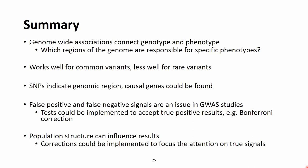To summarize the presentation on genome-wide association studies (GWAS): these are used to connect genotypes and phenotypes — in other words, to find which regions of the genome are responsible for specific phenotypes. GWAS are very frequently used methodologies that work very well for common variants, but less well for rare variants, especially when their effect sizes are low. We screen all SNPs throughout the genome, and significant SNPs indicate genomic regions that could harbor causal genes for the traits we are looking at.